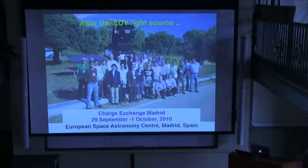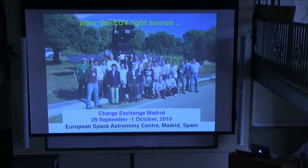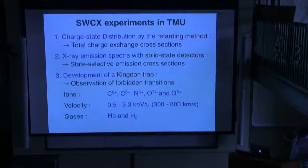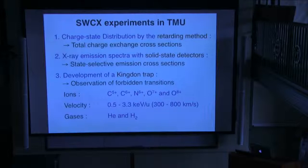After that project, we moved to astrophysics — laboratory astrophysics. About 10 years ago, we had our first meeting for joining many astrophysics groups. Today we talk about mainly two things: total charge exchange cross-sections using a retarding potential method, and state-selective emission cross-sections using a solid-state detector. Finally, I have some time to show our recent project to observe forbidden transition lines using an ion trap.